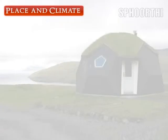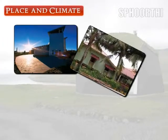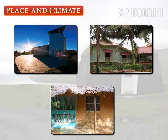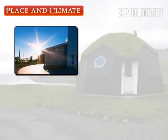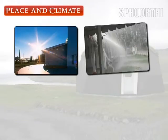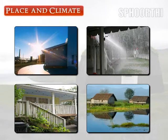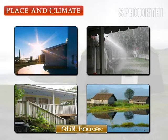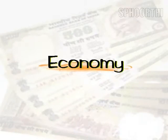Houses in hot places have thick walls to protect from the heat, and may have no glass in the windows to keep the interior cool. In places where the climate is hot and rainy, the houses are made a few feet above the ground to protect against floods. These houses are called stilt houses.